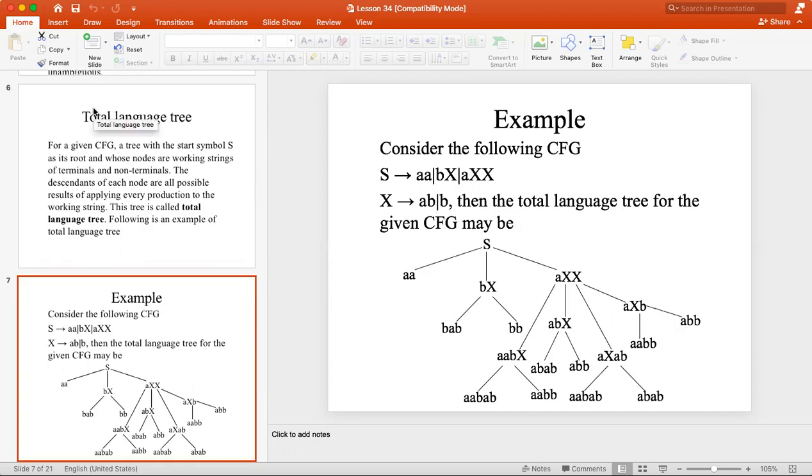Consider the following CFG: S can be AA, BX, or AXX. X can be AB or B. Then the total language tree for the given CFG: S can be AX, the second production is BX, and the third production is AXX.